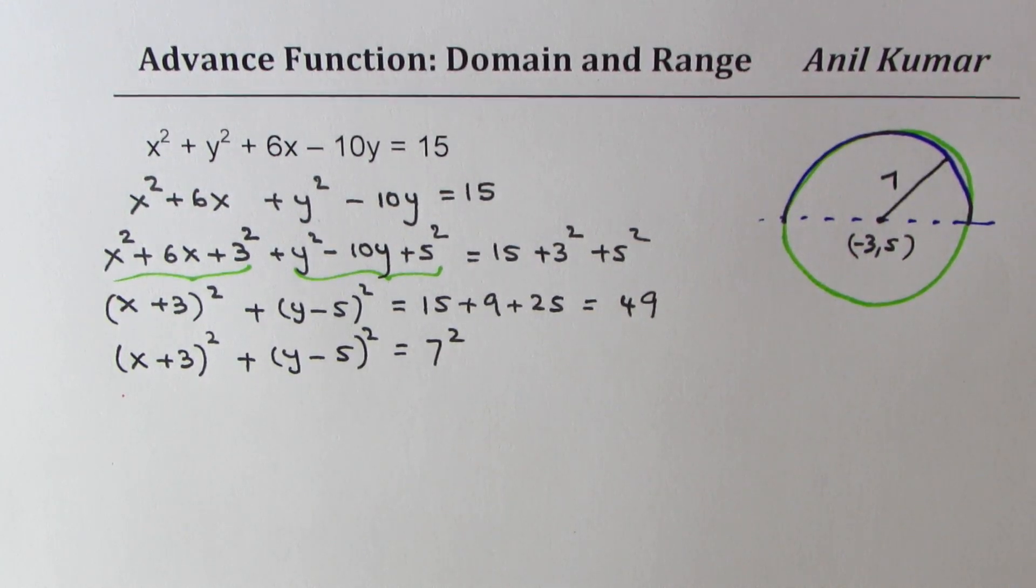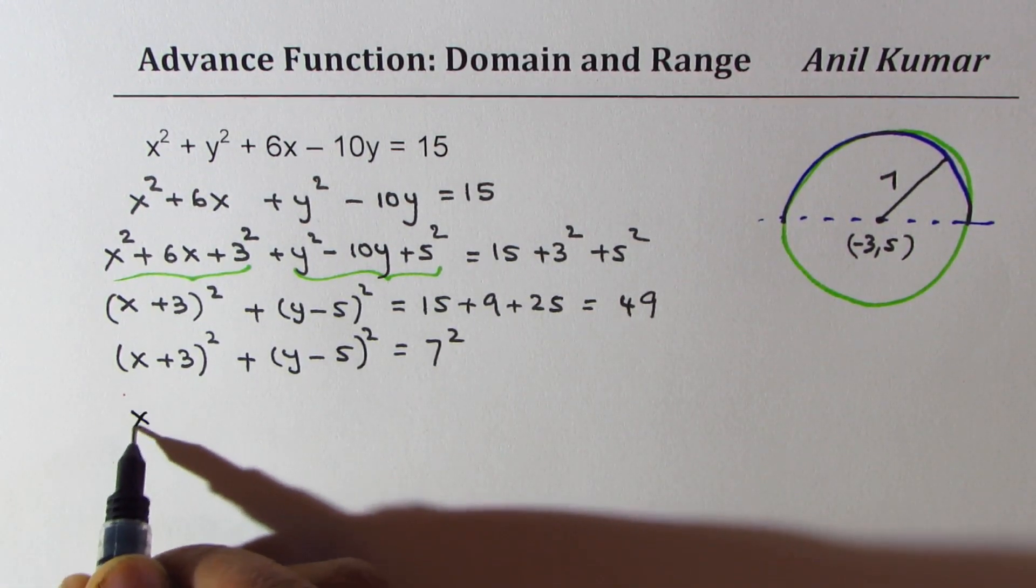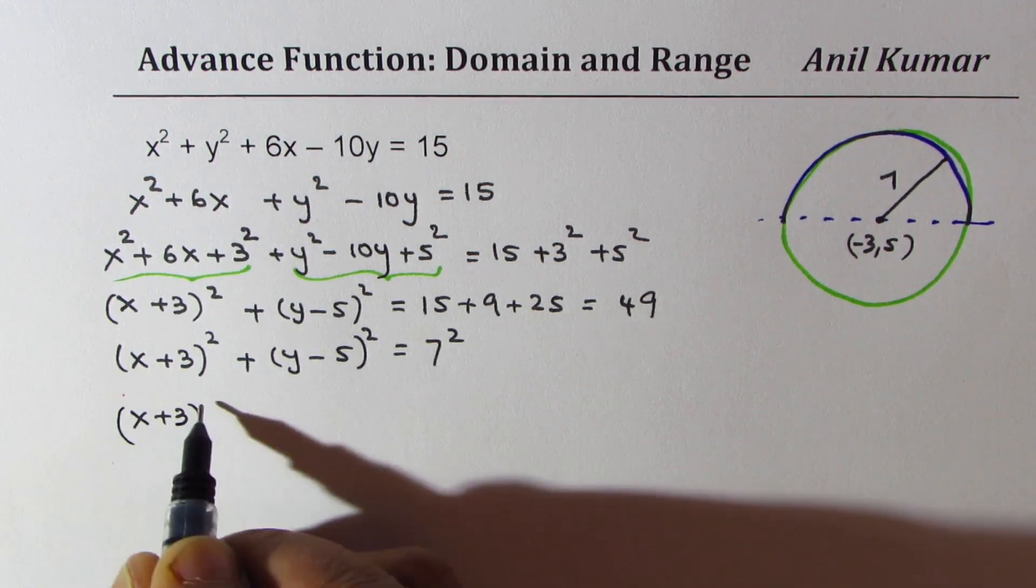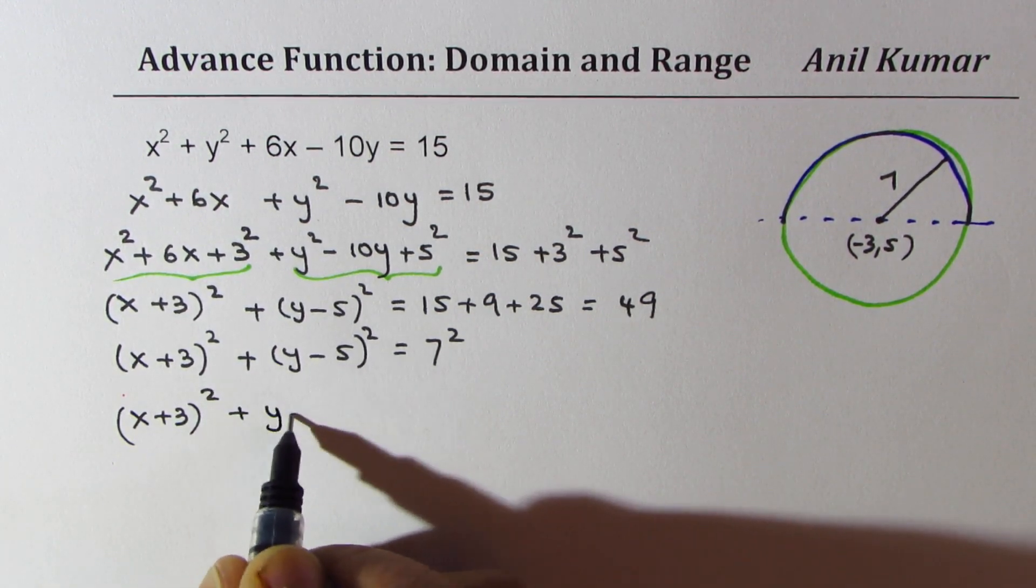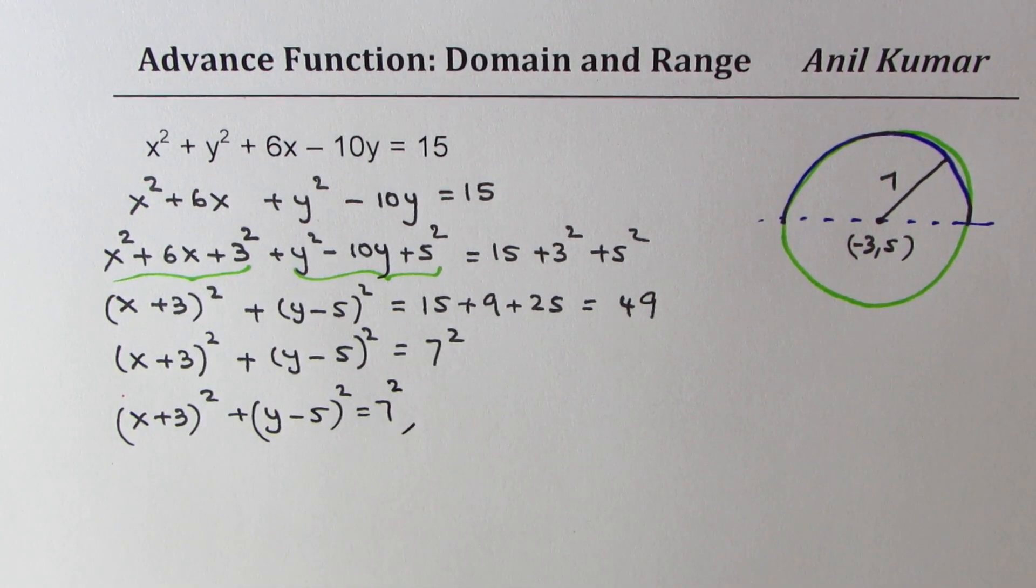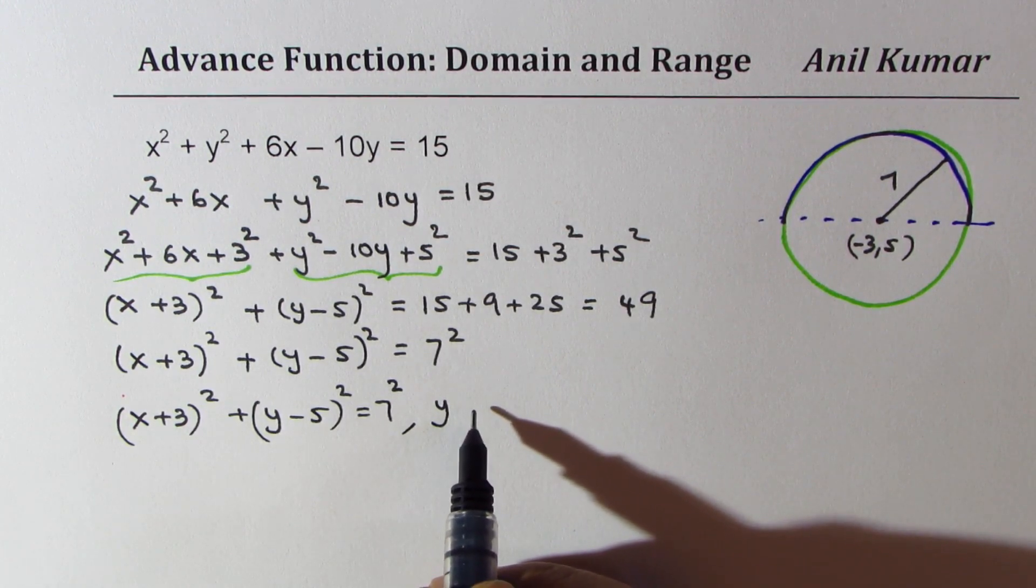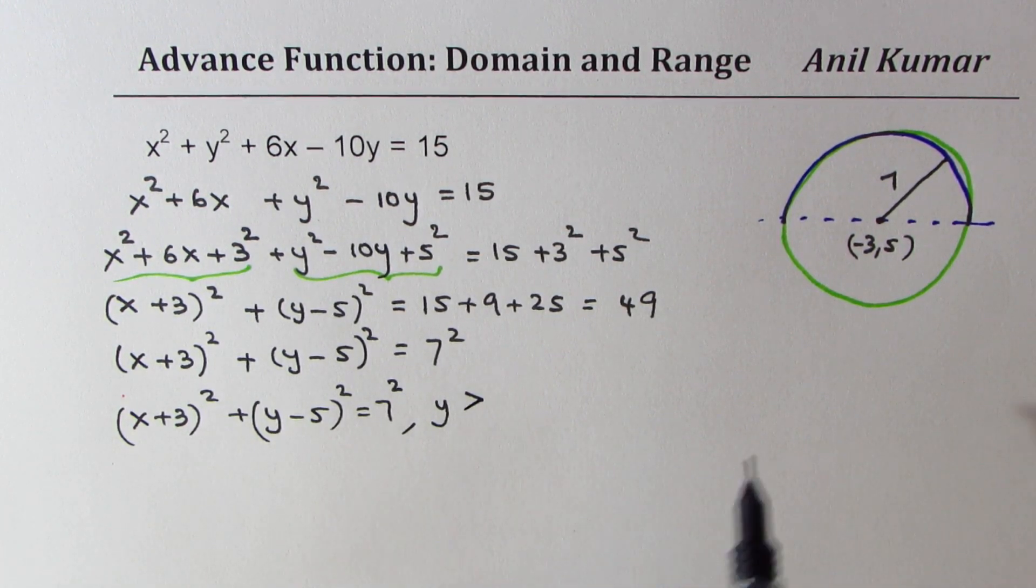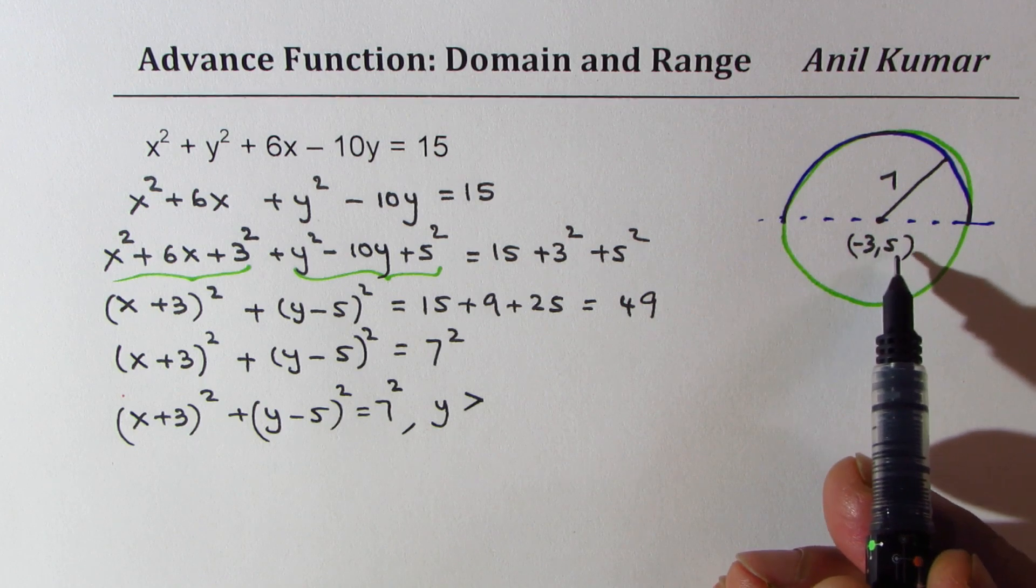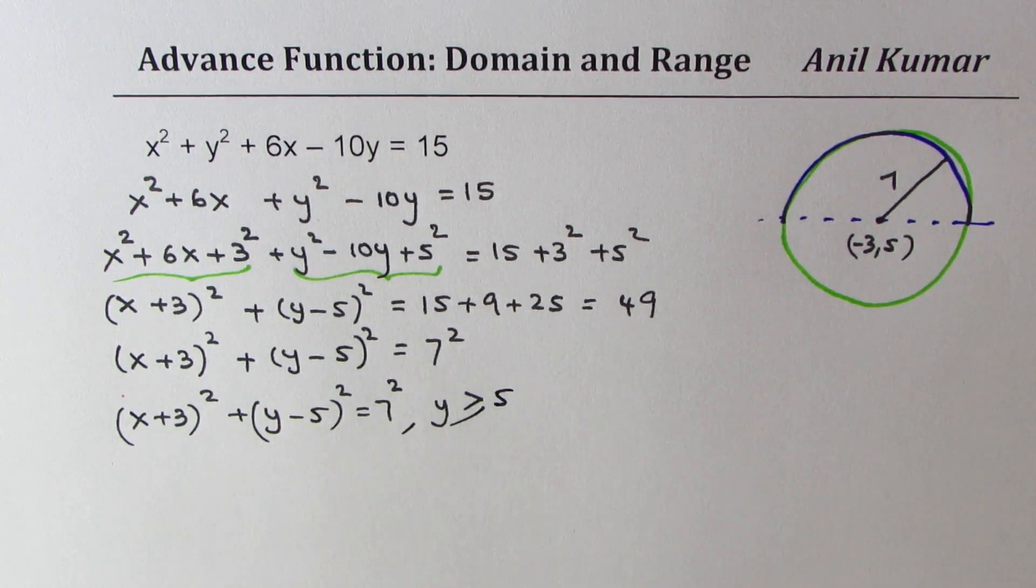So I could write our function as x plus 3 whole square plus y minus 5 whole square equals to 7 square where y is greater than, let's say we can just make it y greater than equal to 5. Is that okay?